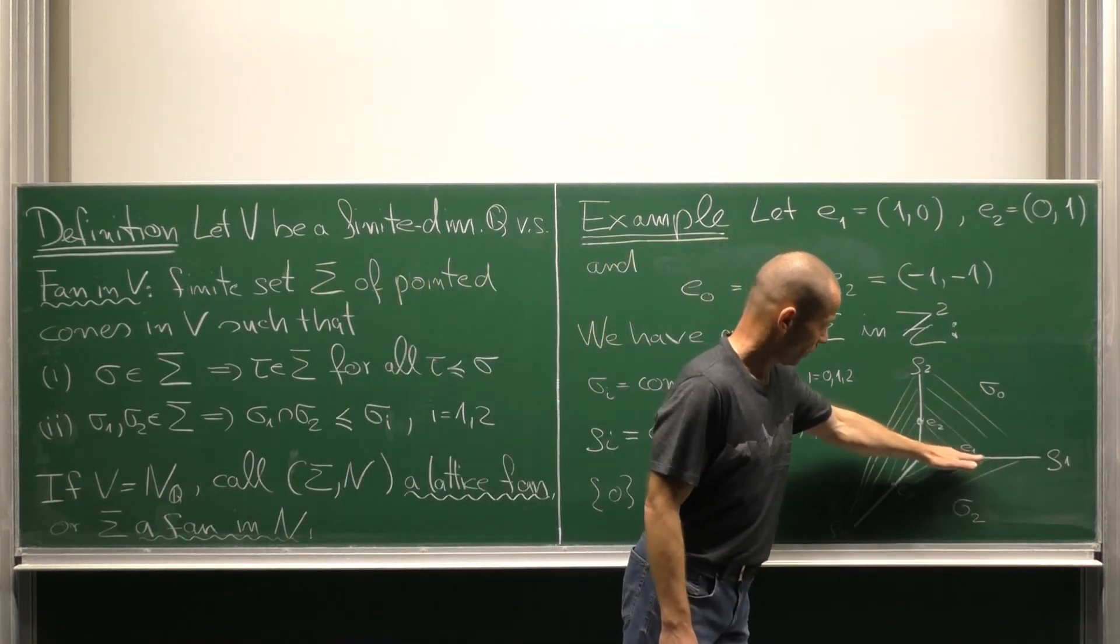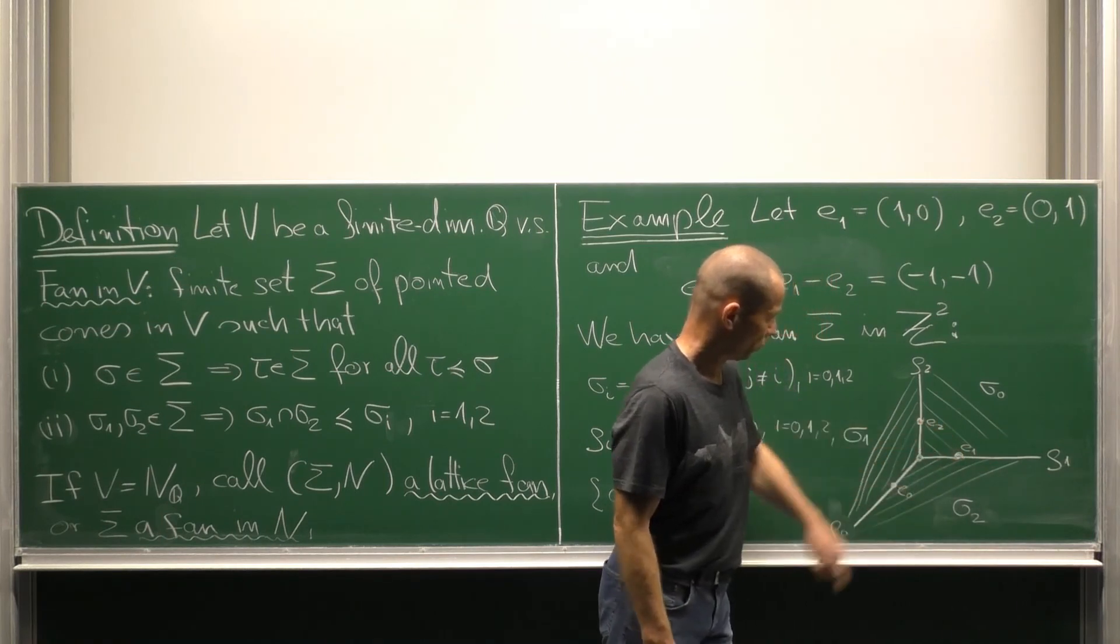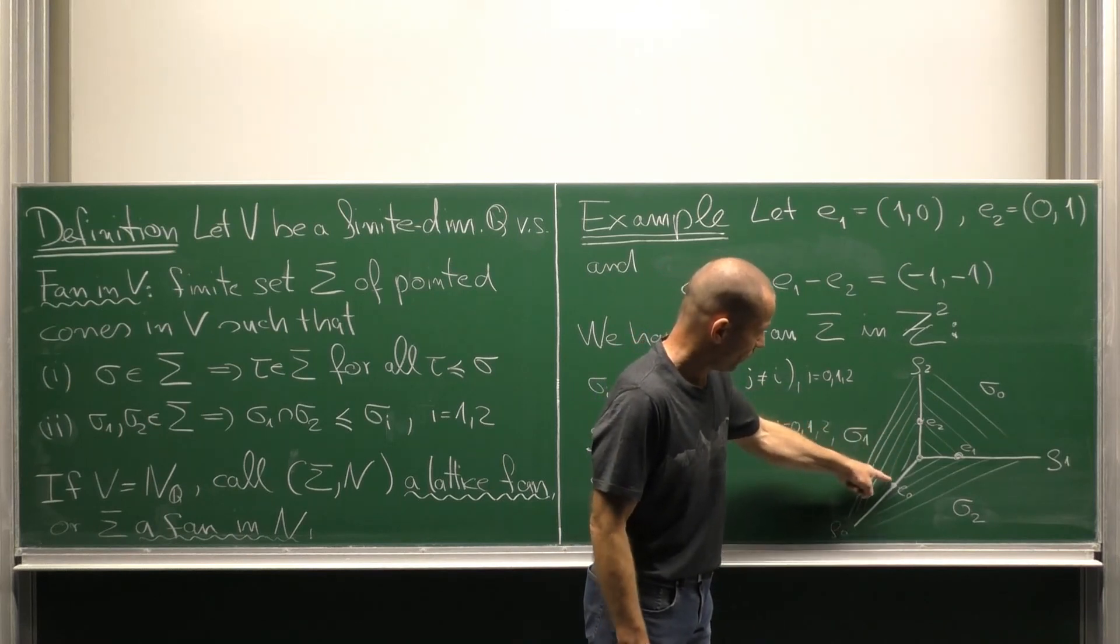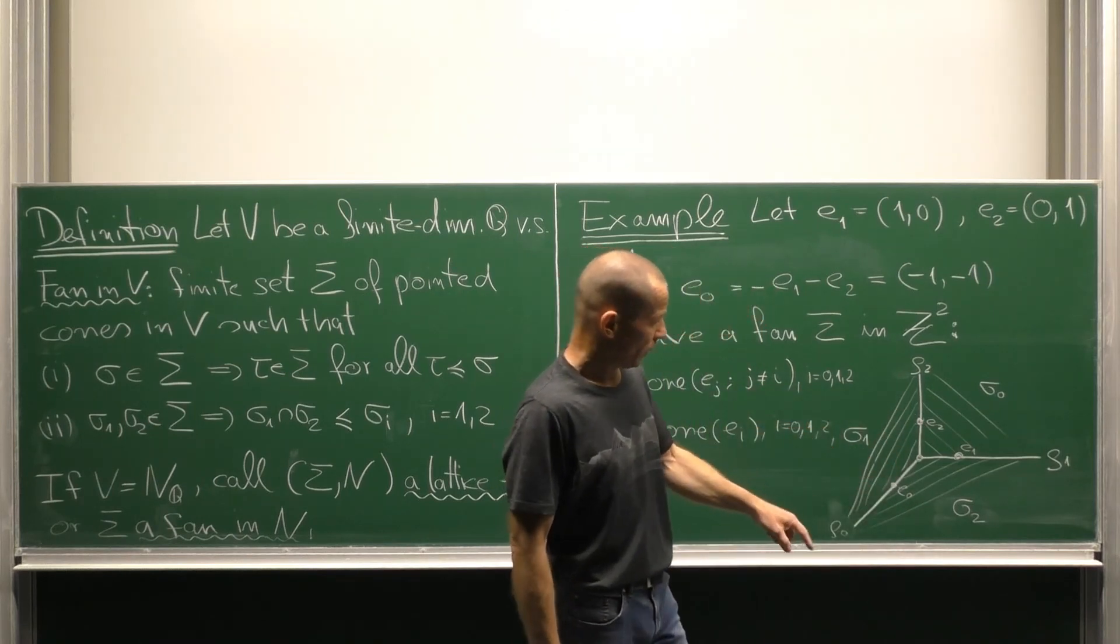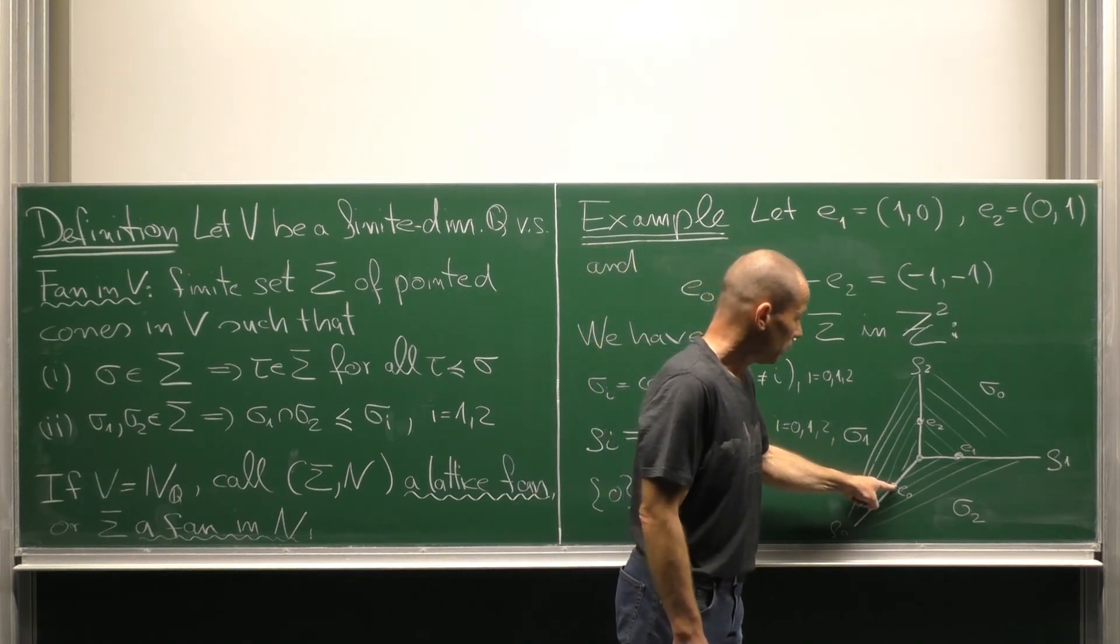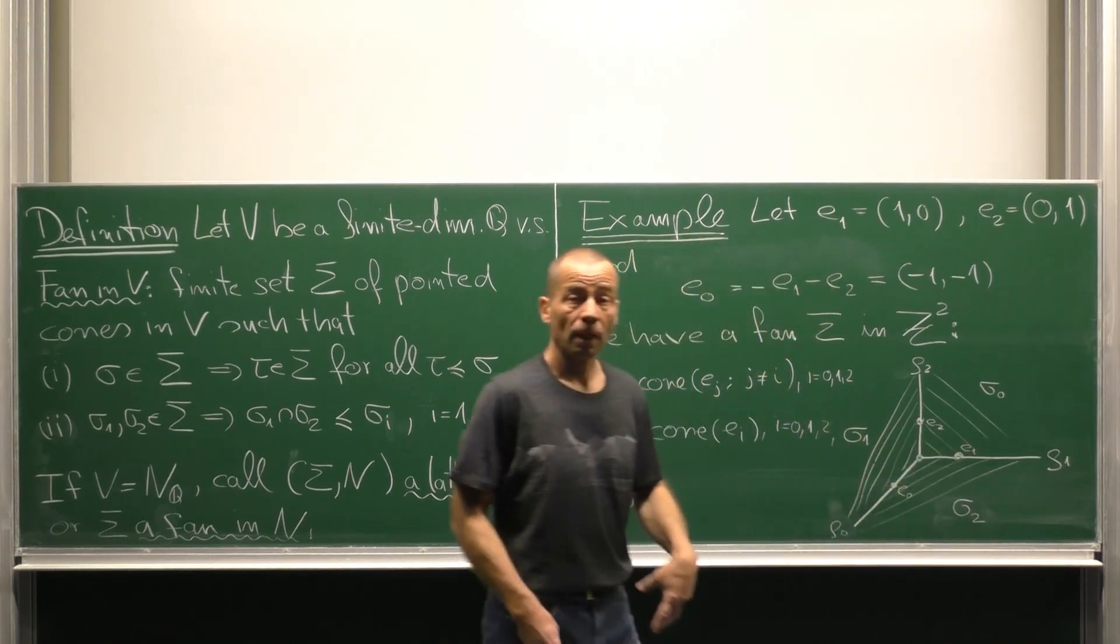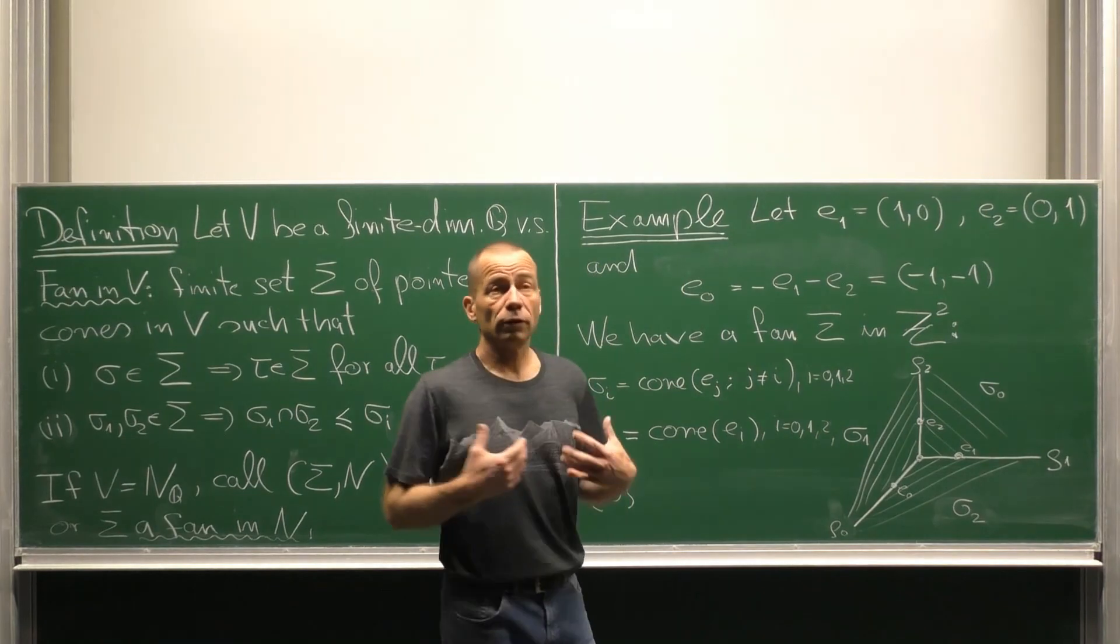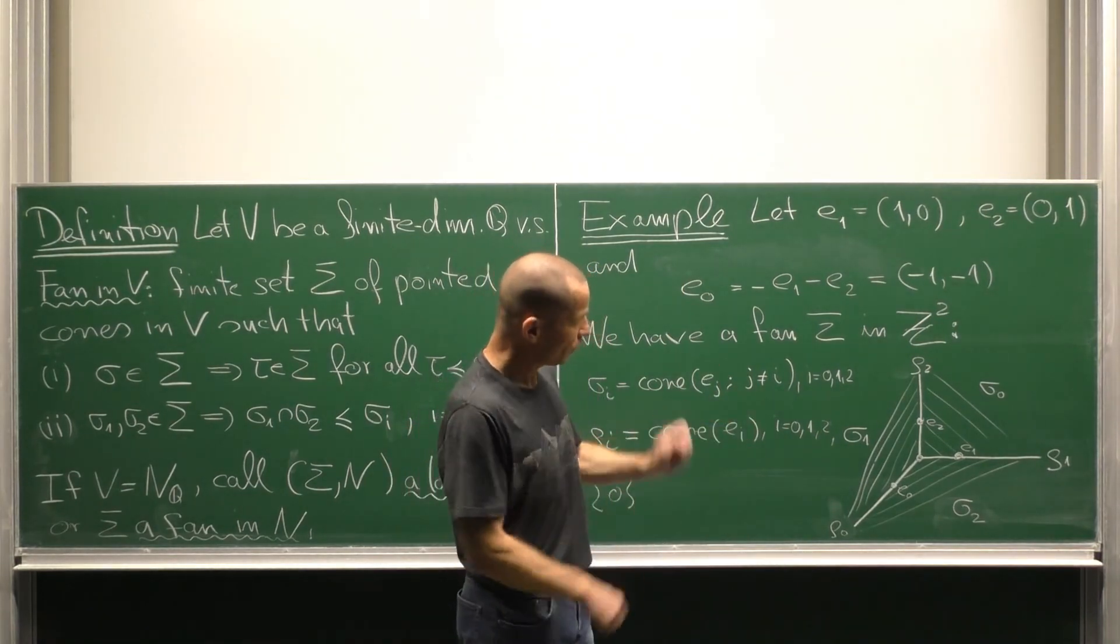Sigma 0 is the cone generated by e1, e2. Sigma 1 is the cone generated by e2, e0. Sigma 2 is the cone generated by e0, e1. These are the maximum cones of our fan and now we just have to add all the faces of them.